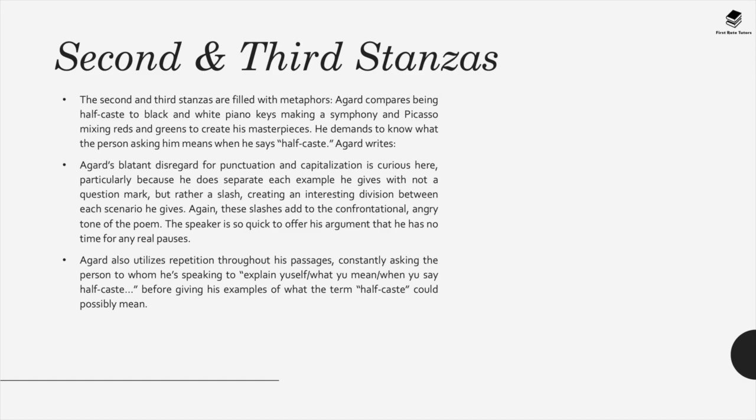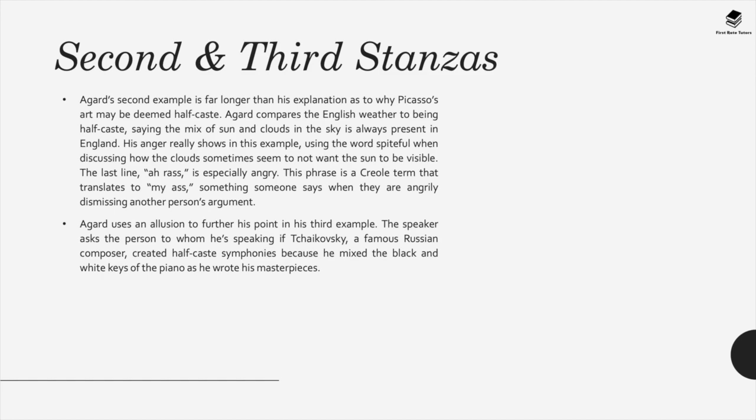Agard's disregard for punctuation and capitalisation creates an interesting division between each scenario using slashes rather than question marks. These add to the confrontational and angry tone of the poem. Agard also uses repetition throughout, constantly asking the person to 'explain yourself' when they say half-caste. He also compares being half-caste to the English weather — the mix of sun and clouds always present in England — which is somewhat humorous. He uses the word 'spiteful' about clouds seeming to hide the sun.